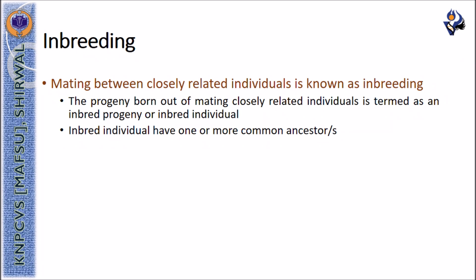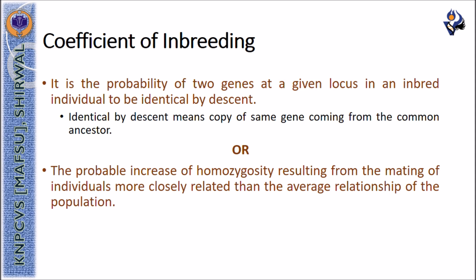Hello and welcome to the class on coefficient of inbreeding. The mating between closely related individuals is known as inbreeding and the progeny born out of such mating is termed as an inbred individual. Inbred individuals have one or more common ancestors. The coefficient of inbreeding denotes the probability of two genes at a given locus in an inbred individual being identical by descent, meaning a copy of the same gene comes from the common ancestor through both the sire and the dam.